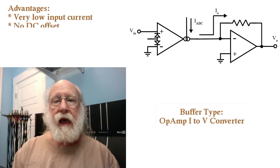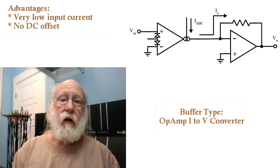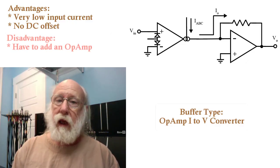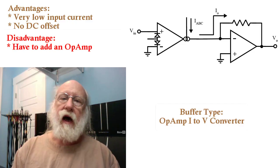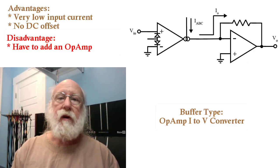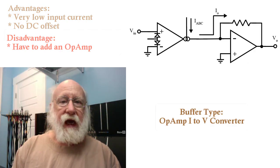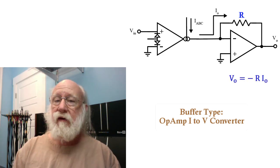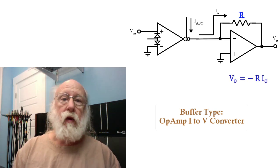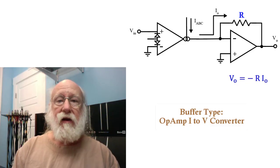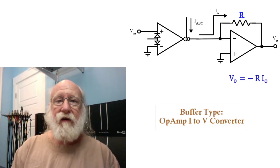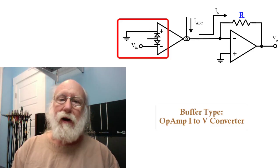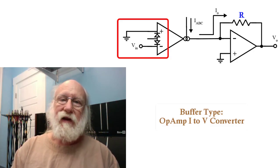The main disadvantage of this scheme is that, just like with the voltage follower, you've got to add an op amp to your circuit. Note that this does invert the sense of the voltage relative to the output current, which may or may not be a problem. If it is a problem, then all you have to do is configure your OTA as an inverting amplifier, not a non-inverting amplifier. So, that's an easy fix.